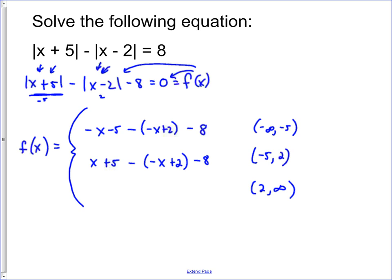And then finally, we're going to, for the last region, both of those absolute values are positive in that region, and so we're going to have x plus five minus x minus two minus eight. Now we simplify our pieces of this piecewise function.